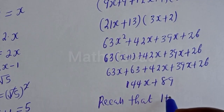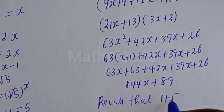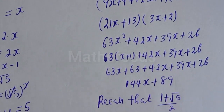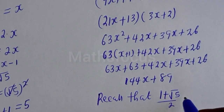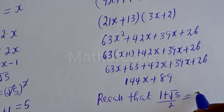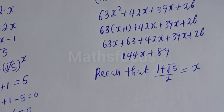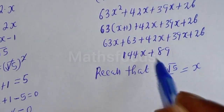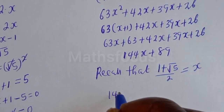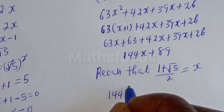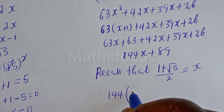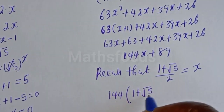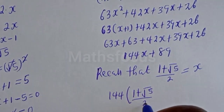Now recall that 1 plus square root of 5 over 2 equals X. Let's substitute back: 144 times (1 plus square root of 5 over 2) plus 89.